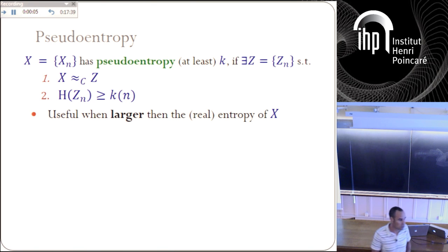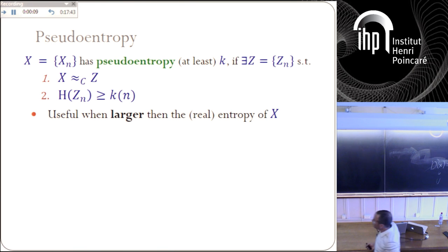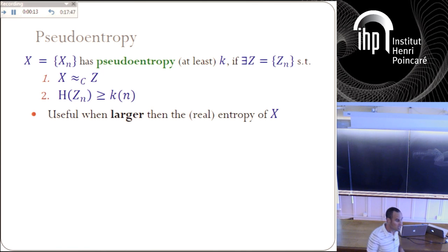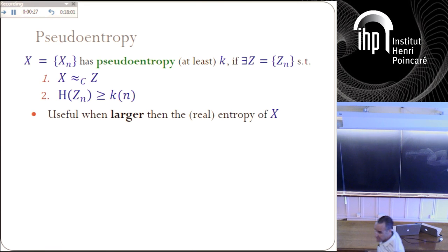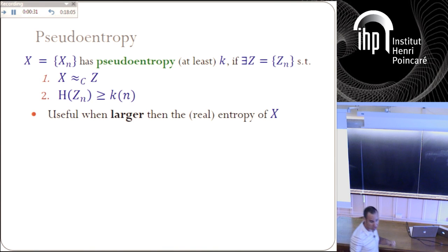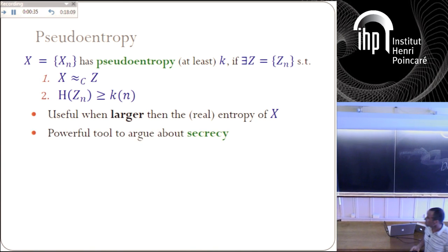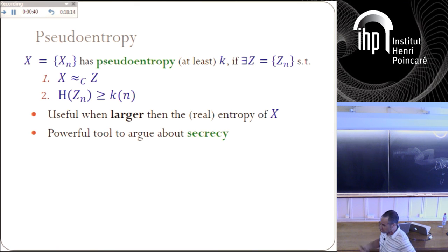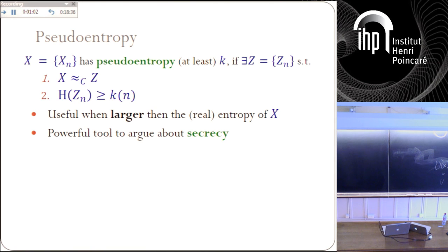More generally, you can relax this notion of pseudo-randomness to pseudo-entropy. Pseudo-entropy says the following: a random variable has pseudo-entropy k if it is computationally indistinguishable from a different random variable Z such that this new random variable Z has truly Shannon entropy k. Pseudo-randomness corresponds to k if it is computationally indistinguishable from a different random variable whose entropy is k. This is a powerful tool to argue about secrecy. It's interesting only if the pseudo-entropy is larger than the real entropy — something interesting happens only if the entropy of Z, which is computationally indistinguishable from X, is larger than the true entropy of X.